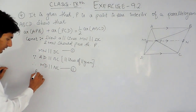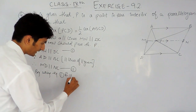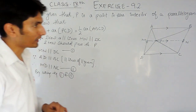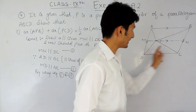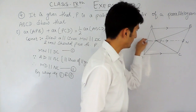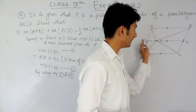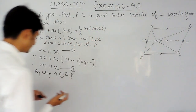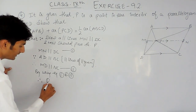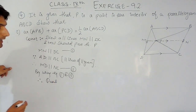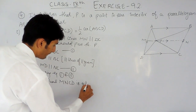By using equation one and equation two, in quadrilateral MNCD, I have proved that MN is parallel to DC and MC is parallel to DN. That means the opposite sides of quadrilateral MNCD are parallel, and therefore quadrilateral MNCD must be a parallelogram.